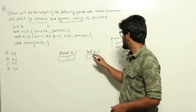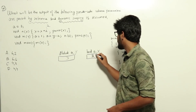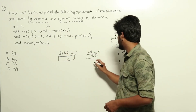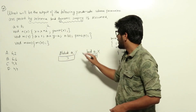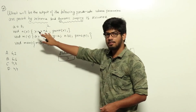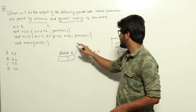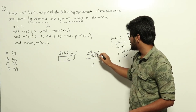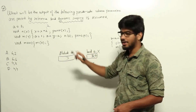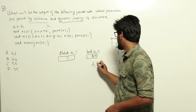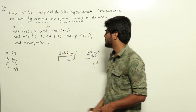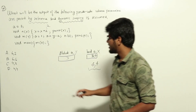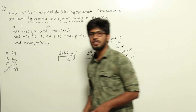So x becomes 2 into 2, which is 4, and we print x — so 4 is printed first. After exiting from n, we return to m and print a. Local a's value has now become 4 since it was passed by reference. So 4 is printed again. The output is 4, 4 — that is option D.